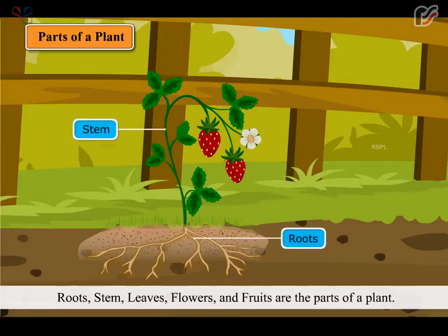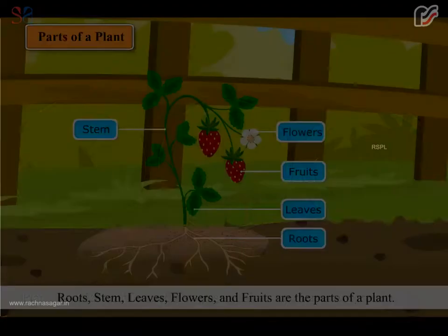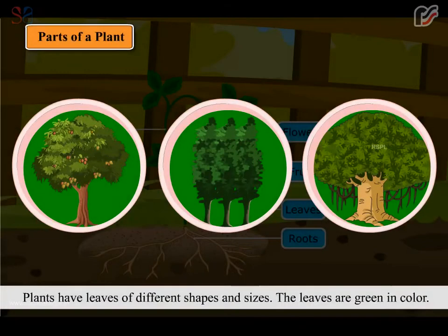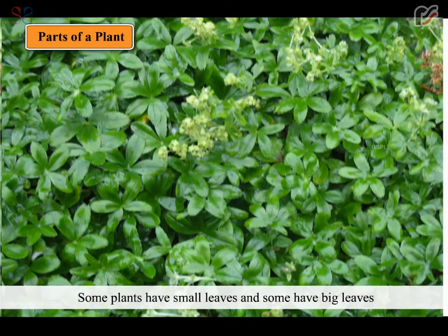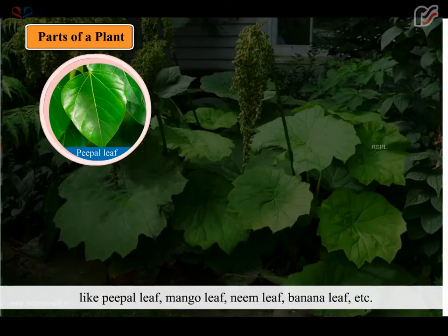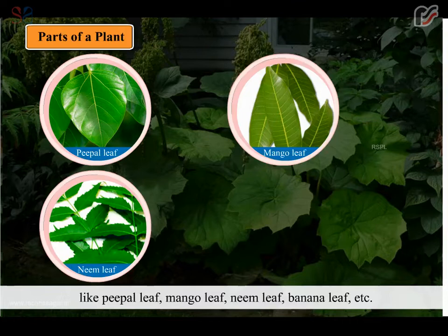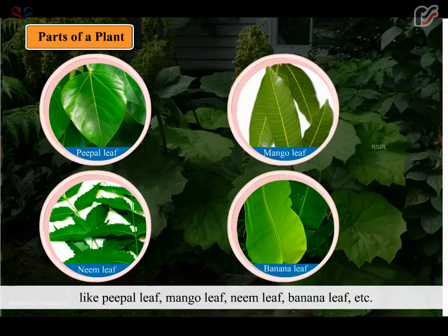Roots, stems, leaves, flowers and fruits are the parts of a plant. Plants have leaves of different shapes and sizes. The leaves are green in color. Some plants have small leaves and some have big leaves. Like peeple leaf, mango leaf, neem leaf, banana leaf etc.